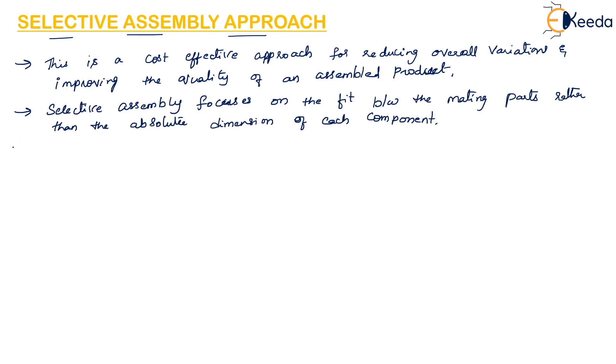What is actually done in Selective Assembly Approach? The mating components are measured, sorted by dimension, and binned into groups before the assembly process.